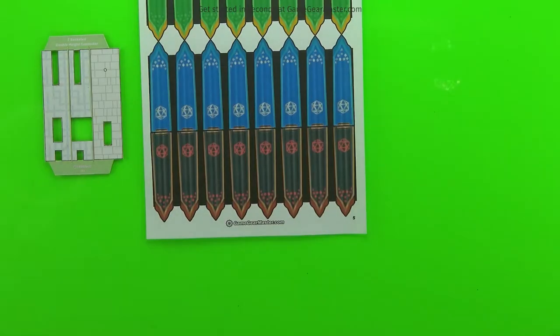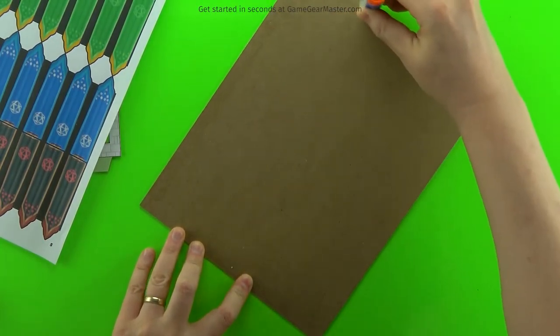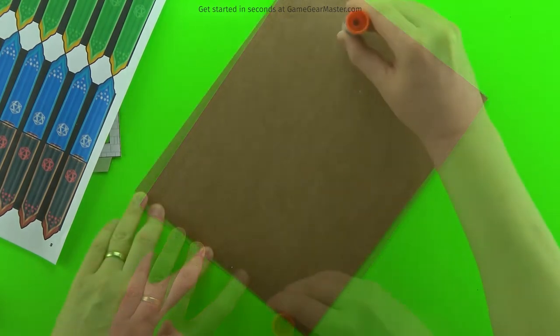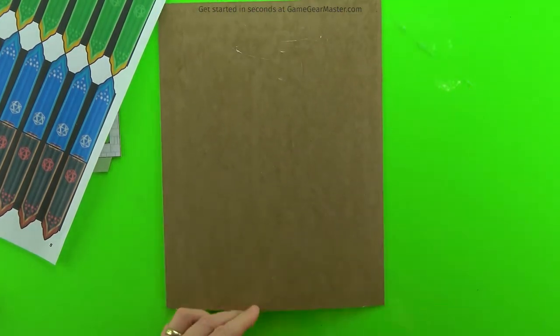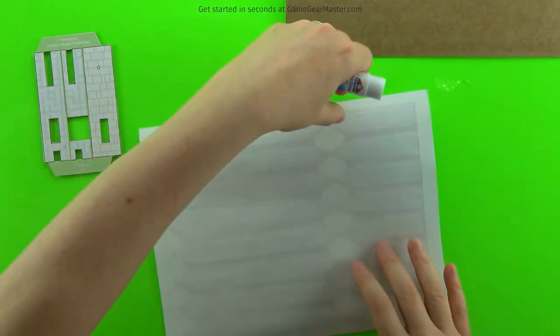So you're going to need at least one printout of the flags from the Terraino tech and torches printable textures file. And here I'm doing the double height banners or flags and just need to glue them onto some cardboard. I like to add glue to both the cardboard and the paper because that way it gets on there really well.